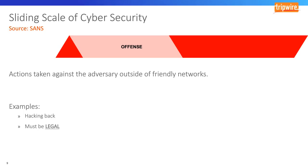The offense phase is what we call hacking back. Unless you're a government entity, you will not legally be reaching this phase. This is where actions are taken against an adversary outside of your friendly network. Active defense would be eliminating malware from your environment or blocking a command-and-control server at perimeter firewalls. Offense would be attacking that C2 server and trying to take it offline. Because attribution is incredibly hard, it's really unwise for organizations to attempt to reach this phase.